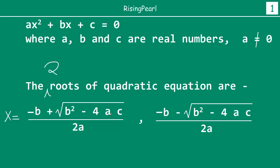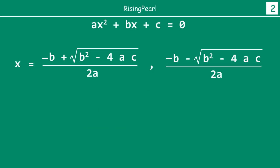We also saw that for this to be true, this term inside the square root — that is b squared minus 4ac — should be greater than or equal to 0. We are going to elaborate on that a little bit in this webisode. So we have written the equation in standard form and these are the two roots. Let's call this term b squared minus 4ac capital D.